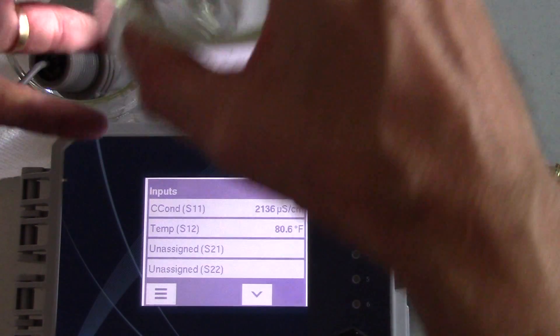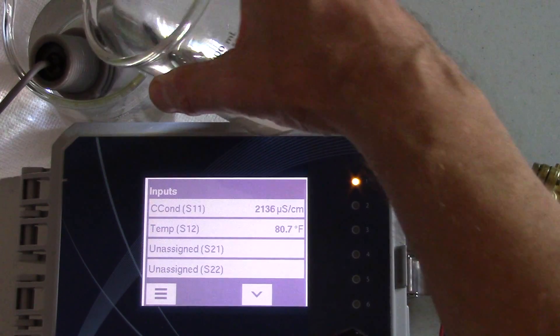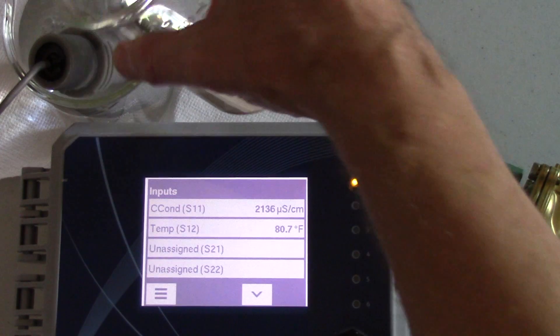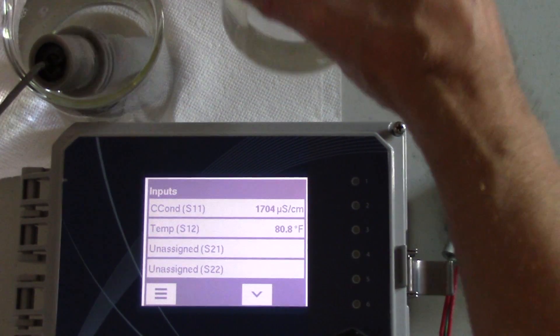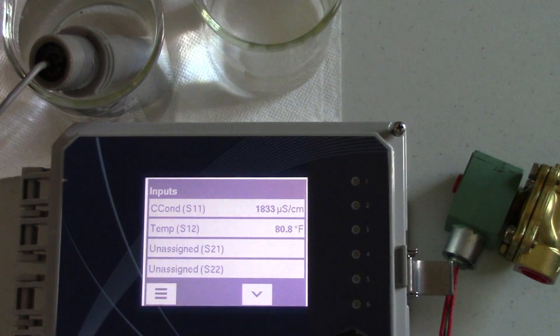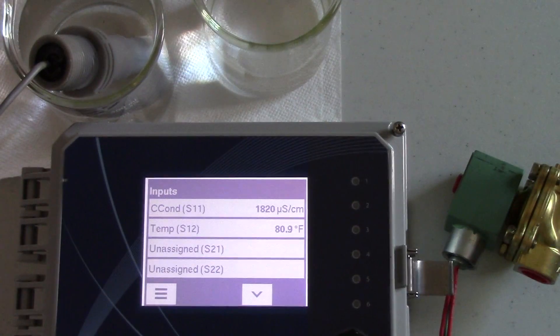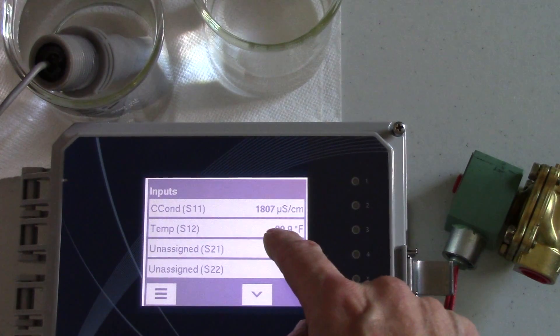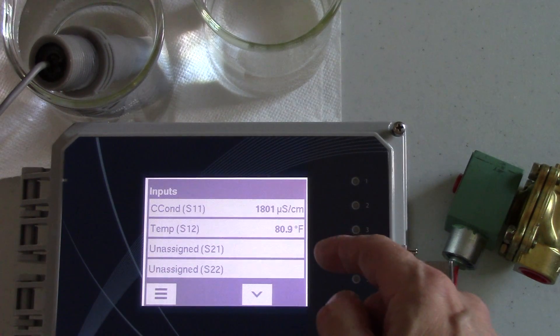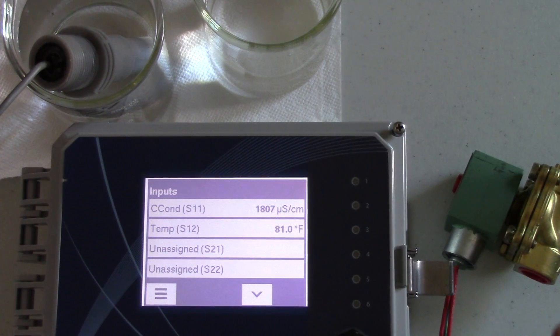And what it does is it blows down the tower while adding fresh makeup water. That lowers the conductivity until it gets below the set point minus the dead band and you can see it actually went below 1800 and now it's above 1800 but the relay is off. That prevents chattering.